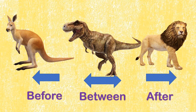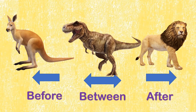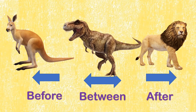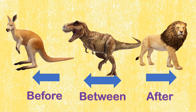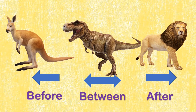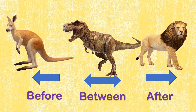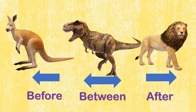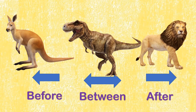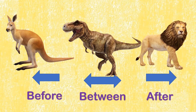The dinosaur is in between kangaroo and lion. The kangaroo is before dinosaur and the lion is after the dinosaur.